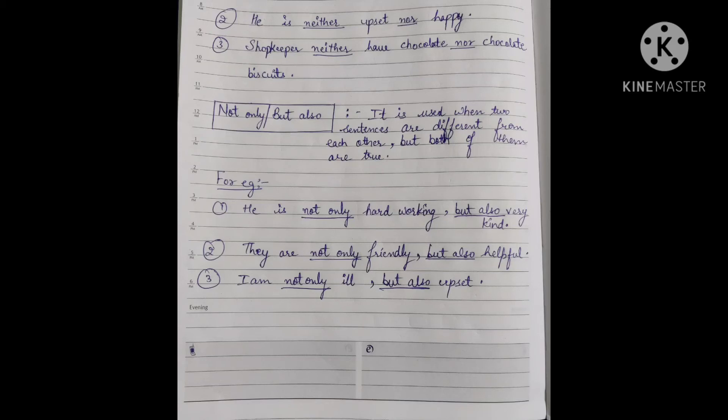Second example: 'He is neither upset nor happy.' When we talk about someone and say he is neither sad nor happy, we use 'neither...nor' as correlative conjunctions to join them, because both 'upset' and 'happy' are objects with equal importance and neither applies.